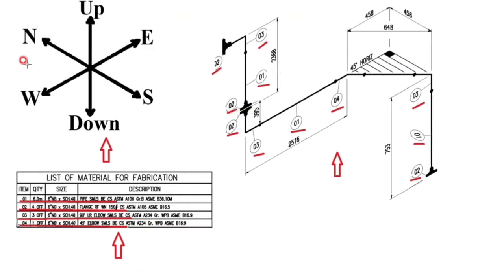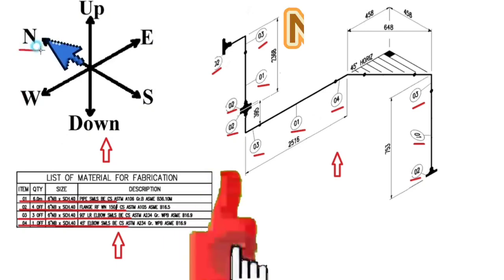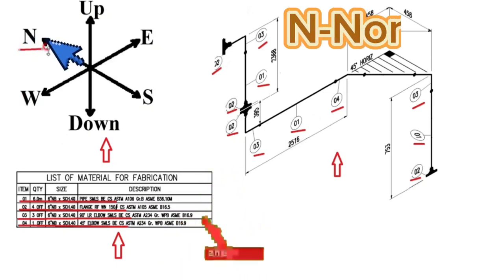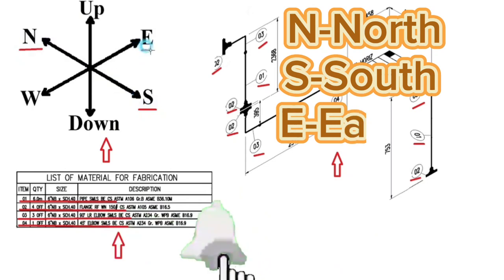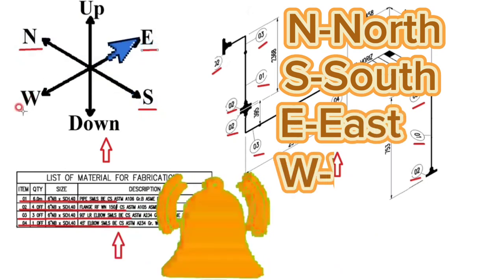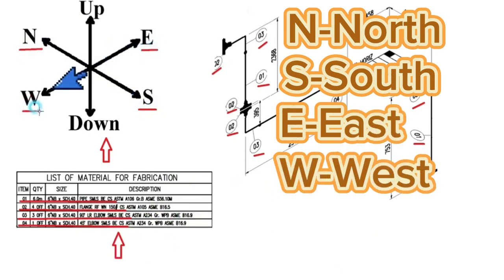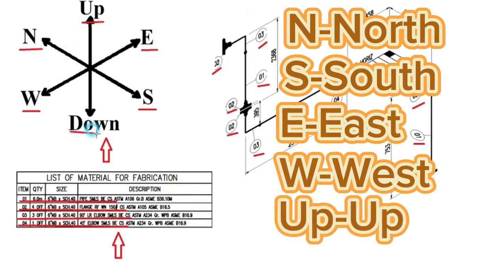Every pipe drawing has such a sketch — this indicates the directions. By studying these directions, we can easily read the pipe isometry. There are 6 directions here: N stands for north, S stands for south, E stands for east, W stands for west, Up stands for up, and Down stands for down.